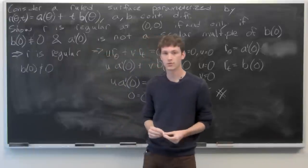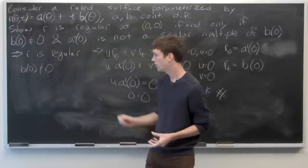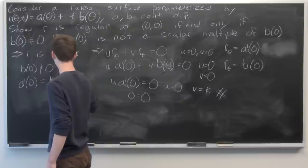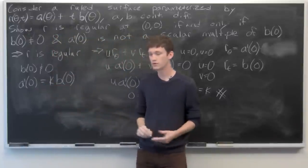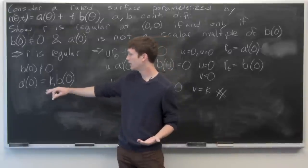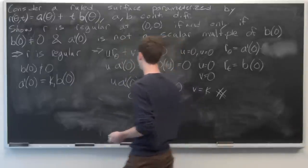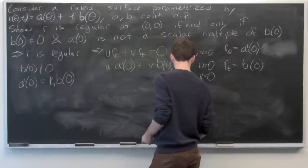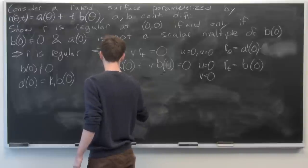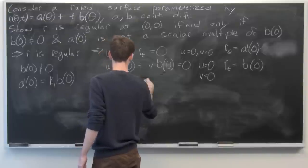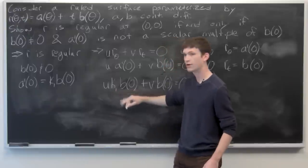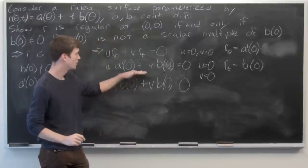Now we want to show that a′(0) is not a scalar multiple of b(0). Again we suppose the contrary: assume a′(0) = k₁·b(0) for some constant k₁. If that's true, we go back and substitute for a′(0) in our equation.